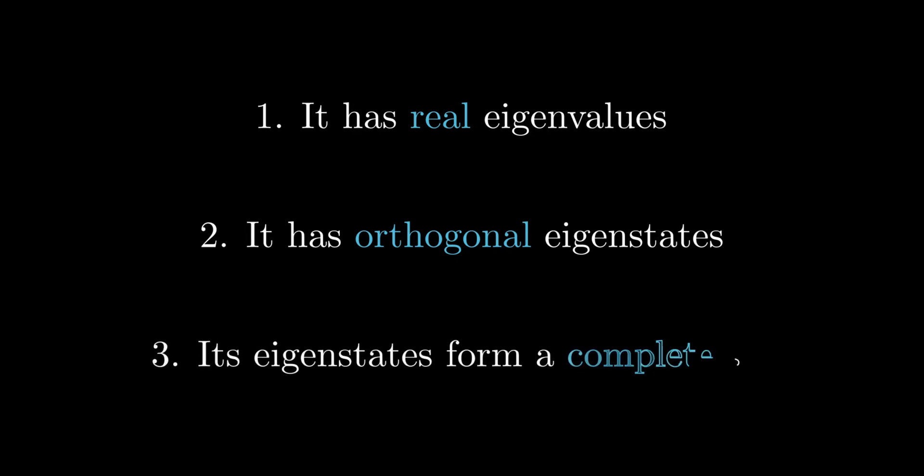Physical intuition suggests observable must have three important properties. 1. It has real eigenvalues. 2. It has orthogonal eigenstates. 3. Its eigenstates form a complete set. The justification runs as follows. For property 1, physical quantities must have real values. For property 2, states of certainty of different values of a physical quantity are mutually exclusive events. Thus, the kets representing each definite outcome must point in completely different directions, hence orthogonal.